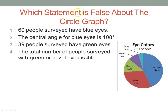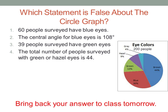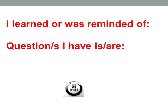Which statement is false about the circle graph? Is it: 60 people surveyed have blue eyes (use the total and 30%); the central angle for blue eyes is 108 degrees; 39 people have green eyes; or the total number surveyed with green or hazel eyes equals a certain number? Pause, figure out which is false, and bring that answer back to class tomorrow. Please let me know what you learned, what you were reminded of, and any questions you have. I hope you enjoyed the video.